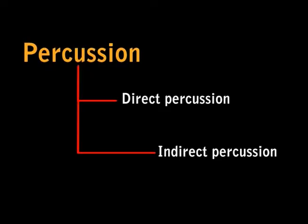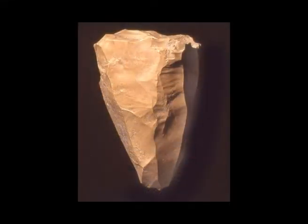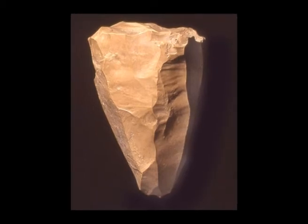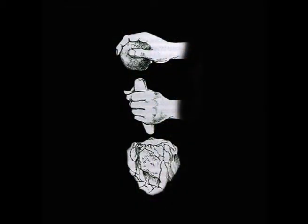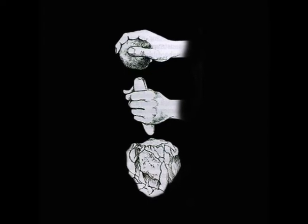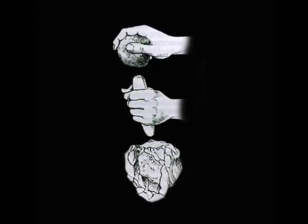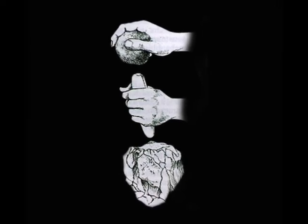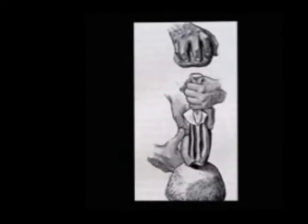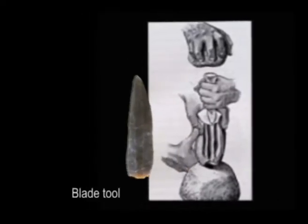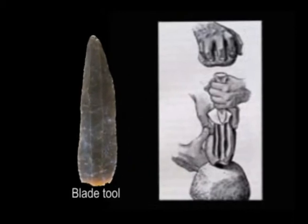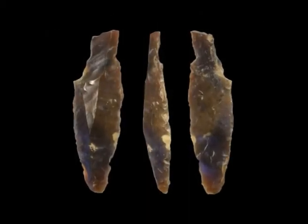Now let's come to the next point: indirect percussion technique. It is one of the methods of obtaining a blade used by prehistoric man. In this case, the prepared cylindrical core is not struck directly by the hammer, but through a punch. The pointed end of the punch is fixed on the striking platform of the core and then the hammer strikes the other end of the punch. This results in the removal of a thin blade that exhibits numerous closely placed prominent ripples on the main flake surface.